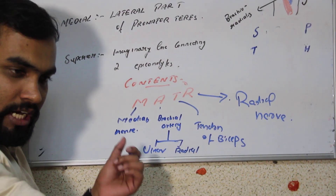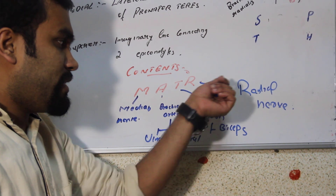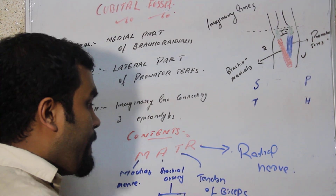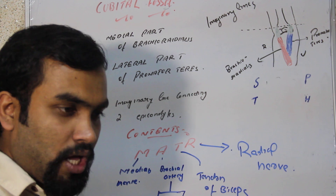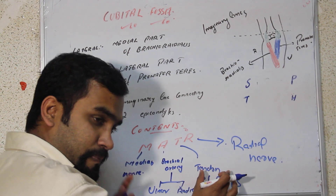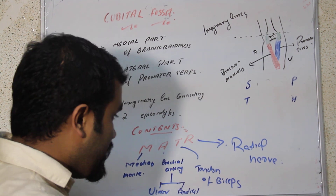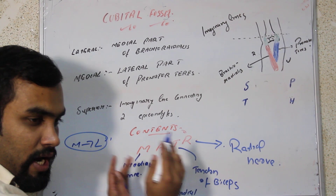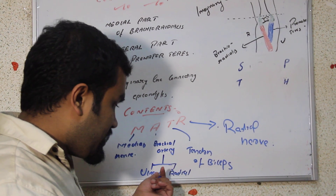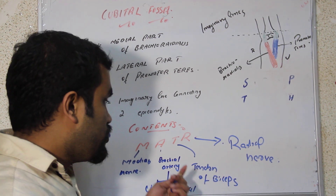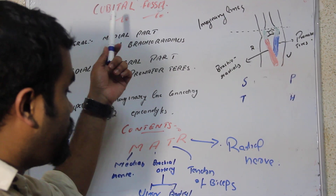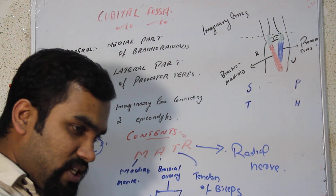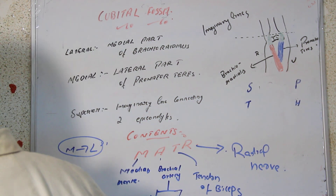These structures are arranged from medial to lateral. Medially we have the median nerve, then the brachial artery (which becomes the ulnar and radial arteries), then the tendon of biceps, and then the radial nerve. In MCQs they may say 'the brachial artery lies medial to the tendon of biceps in the cubital fossa' — that statement is correct. Remember MATR for the contents, and know the boundaries — both are commonly asked in MCQs.